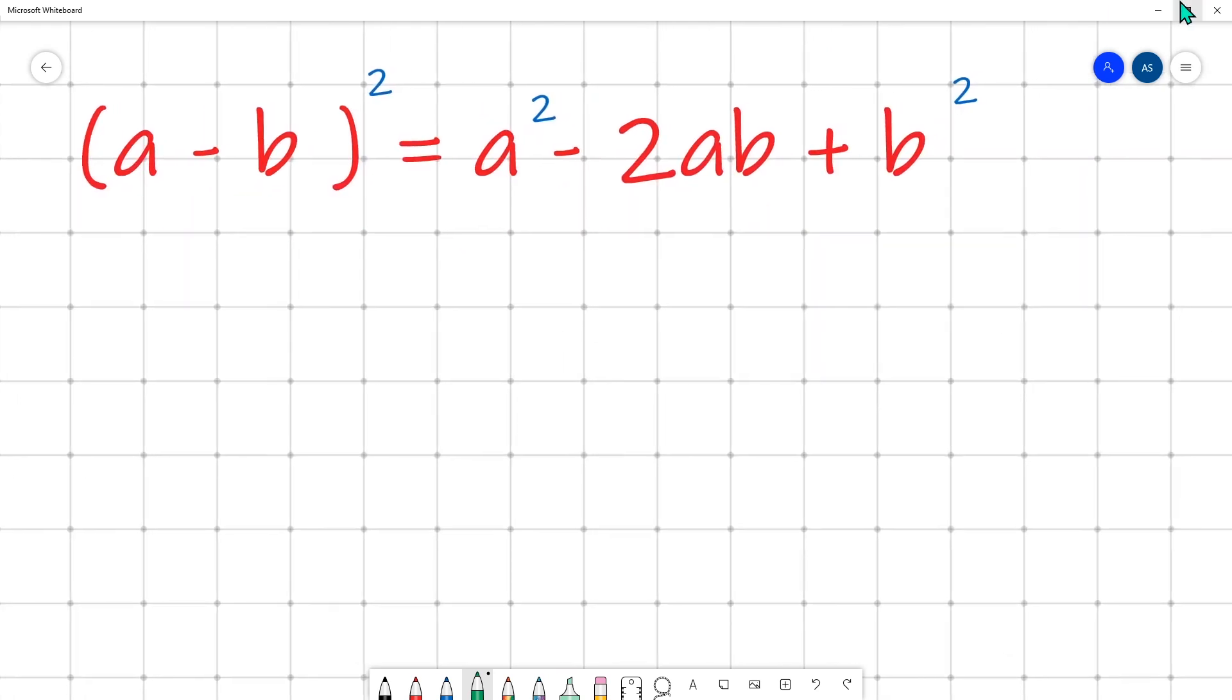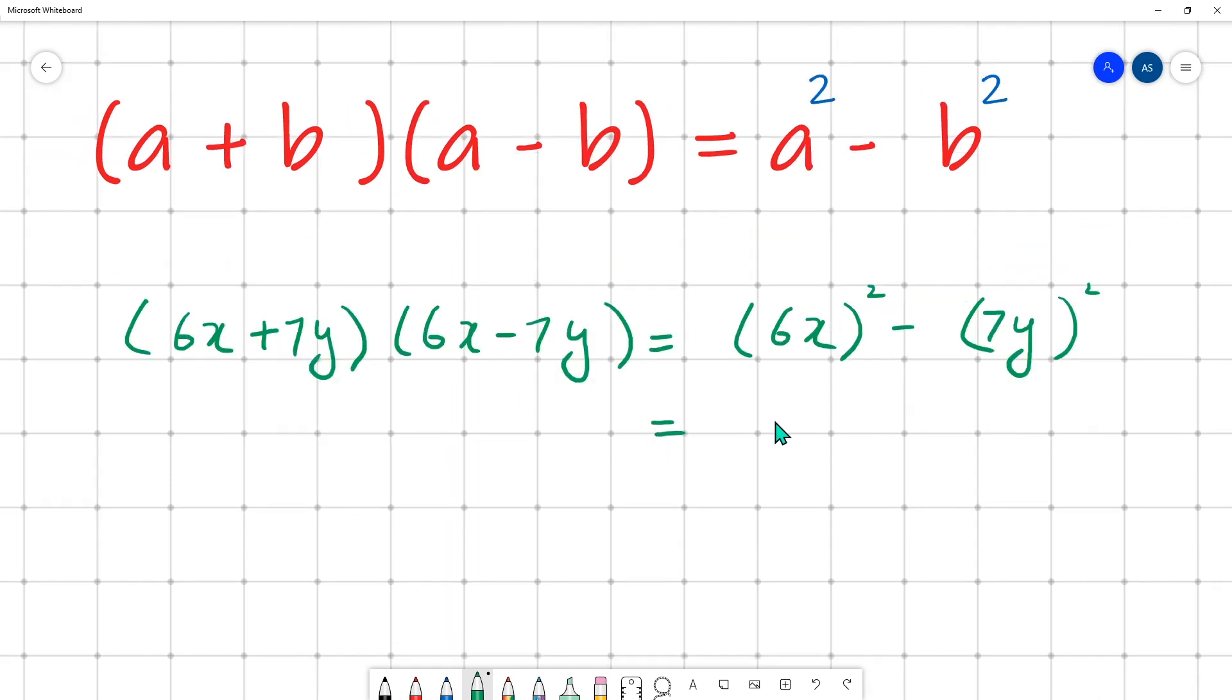Now let's discuss the second identity, a minus b whole square, with the help of another example. Let's say 6x minus 7y. a is 6x and b is 7y. The method is the same, the only difference is now we have 2ab with a negative because in the identity we have a minus b whole square. We are going to substitute the values as usual. Finally we have 36x square and 49y square.